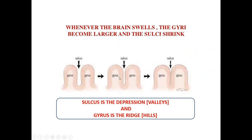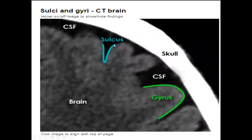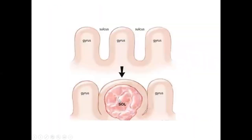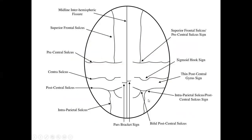When the brain swells, the gyri become larger and the sulcus sinks. This is the sulcus — the CSF space — and these are the gyri. When a tumor or space-occupying lesion swells inside, the sulci shrink and the gyri swell.